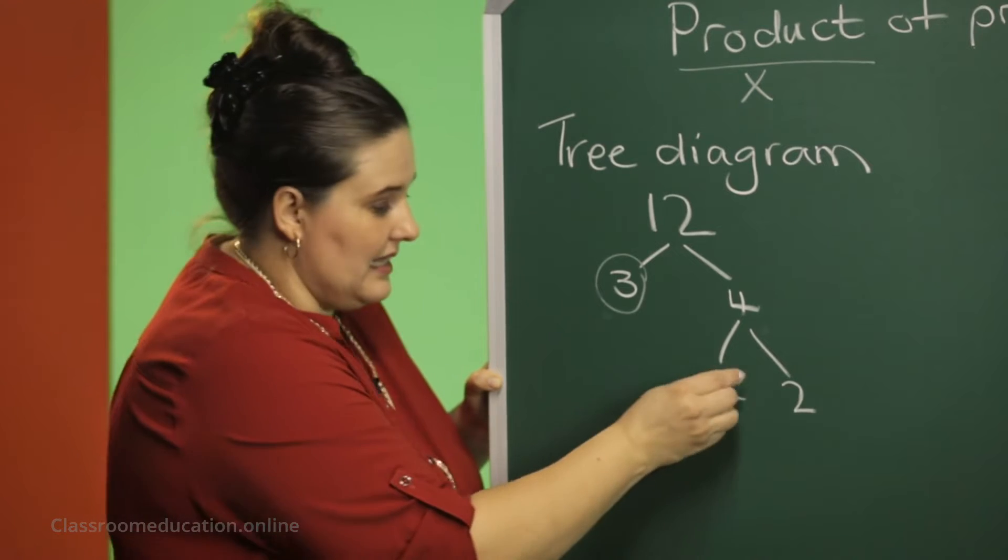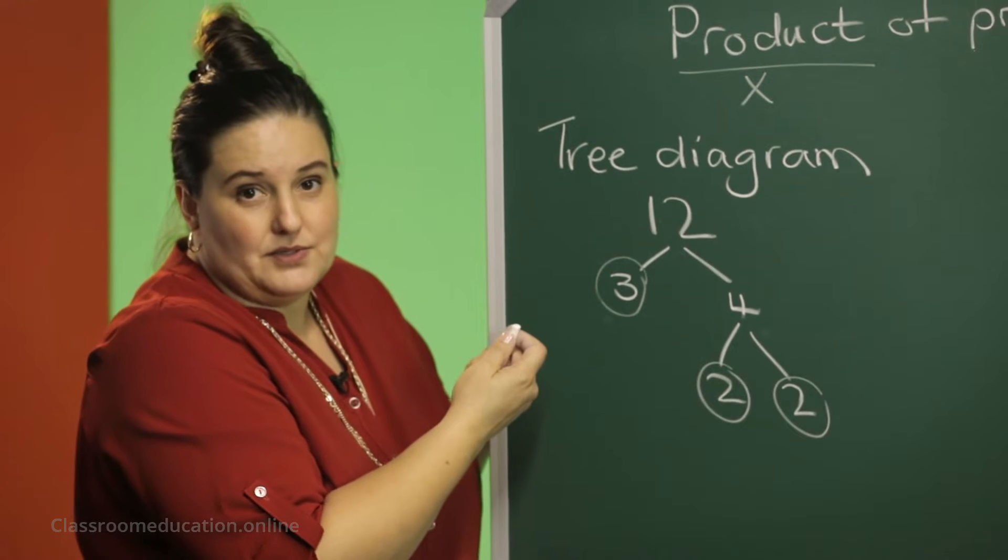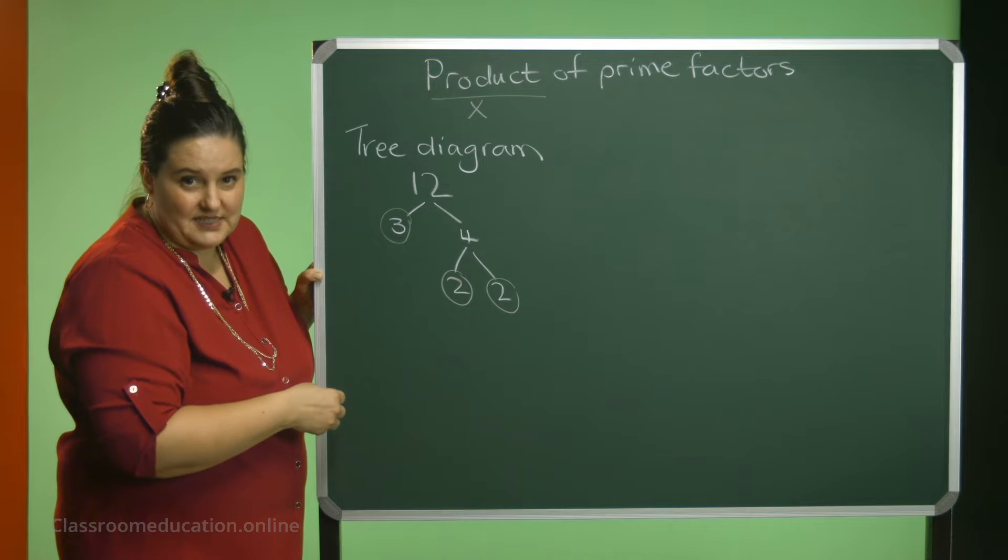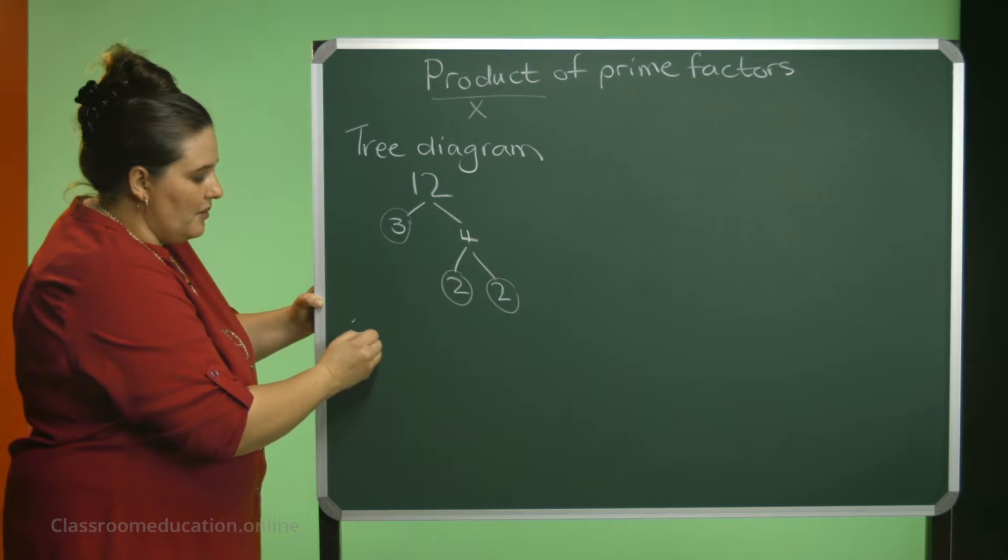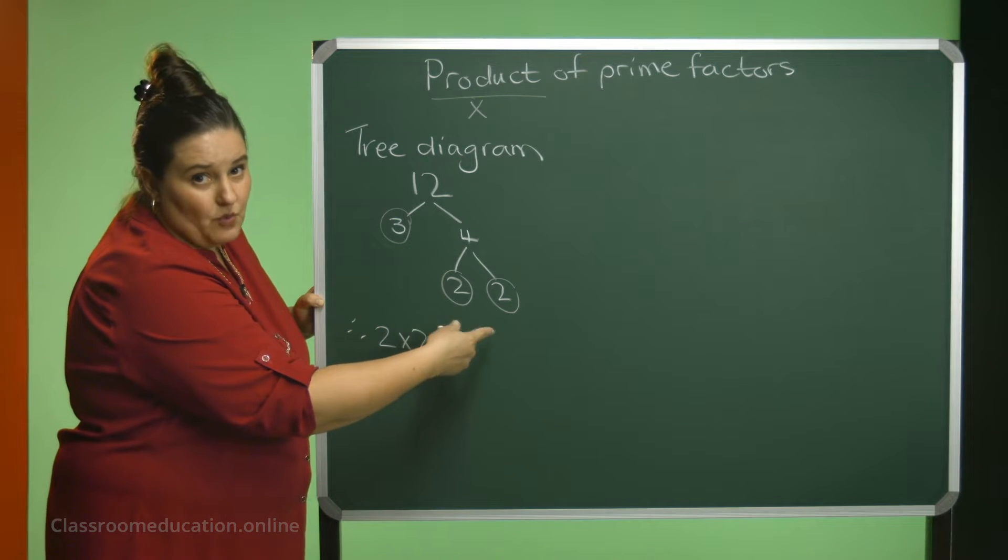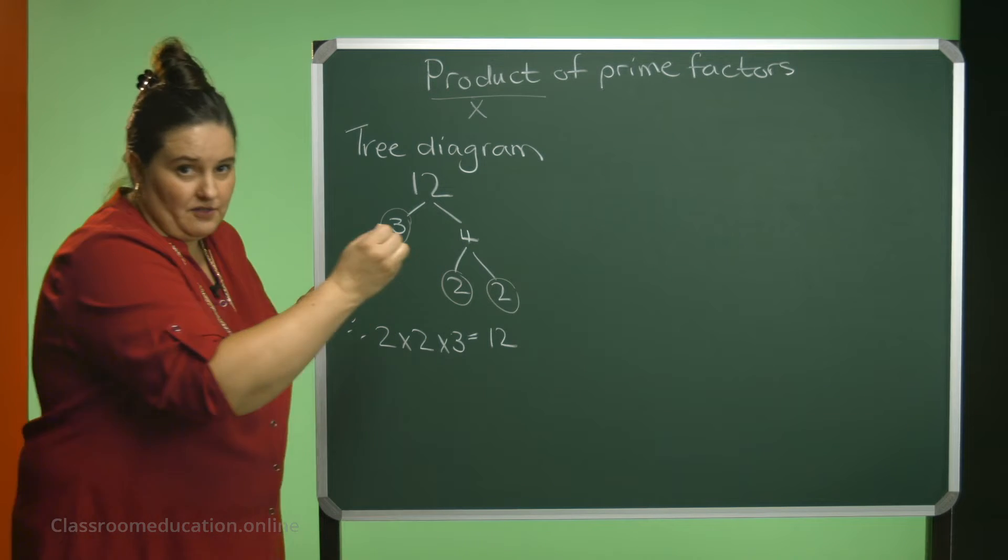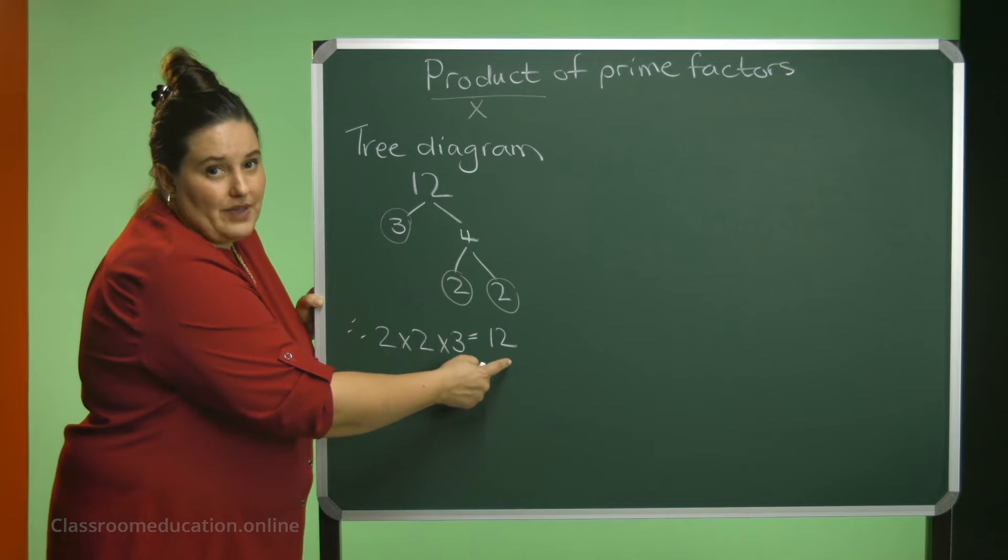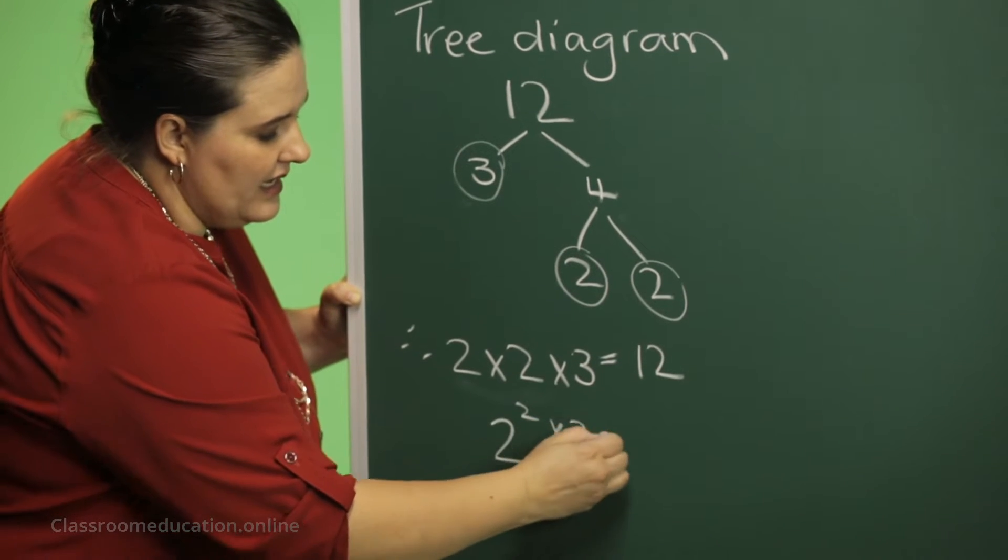Is 2 a prime number? Yes. Now all of these are prime numbers. Because they are factors of 12, all of these are prime factors. If I'm asking you to write it as a product of prime factors, you need to tell me that 2 times 2, I prefer that we start with the smallest numbers, 2 times 2 times 3 equals 12. Let's check. 2 times 2 is 4, 4 times 3 is 12. You can also write the 2 times 2 as 2 squared times 3, and that is 12.